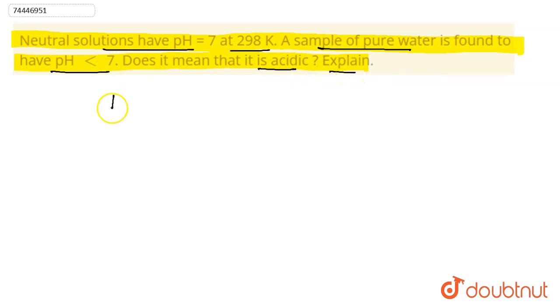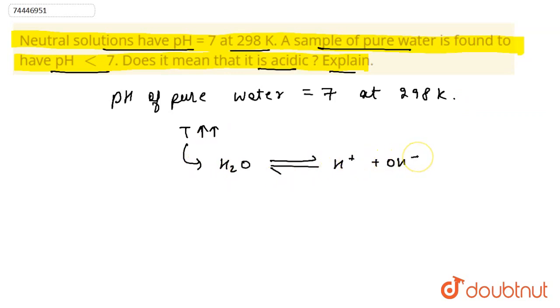So pH of pure water, if we look at pH of pure water, is 7 only at temperature of 298 Kelvin. Now, if we increase the temperature, what happens to water? Water dissociation is H2O equilibrium H plus plus OH minus. The dissociation increases. The value of kW increases.